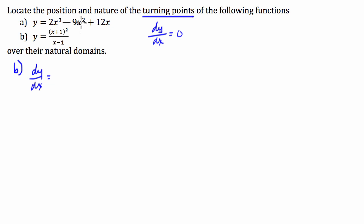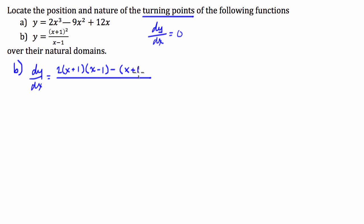So dy/dx is equal to the derivative of the top times the bottom, minus the derivative of the bottom times the top, all over the bottom squared. We know from part A that this has to be equal to 0. With rational functions like this, for the derivative to equal 0, the numerator has to equal 0 — if the denominator equals 0 then the derivative doesn't make sense.